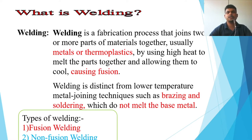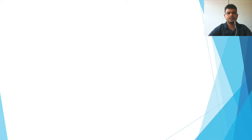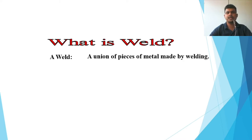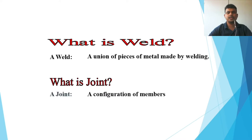Welding has many processes, which we will discuss in a series of lectures. What is a weld? A weld is a union of pieces of metal made by welding. What is a joint? A joint is a configuration of members — two members joined together form a weld joint.